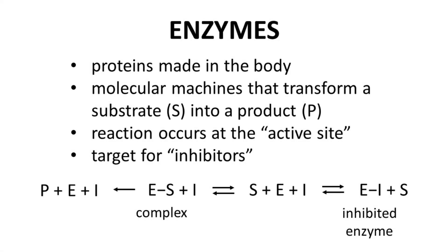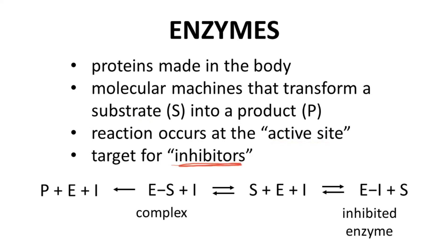Enzymes are our first target. Enzymes are almost always proteins made in the body. They are molecular machines that bind a substrate and transform it into a product. The reaction occurs at the active site on the surface of the enzyme. Drugs that target an enzyme are typically inhibitors that bind and block the active site and therefore shut down the function of the enzyme.